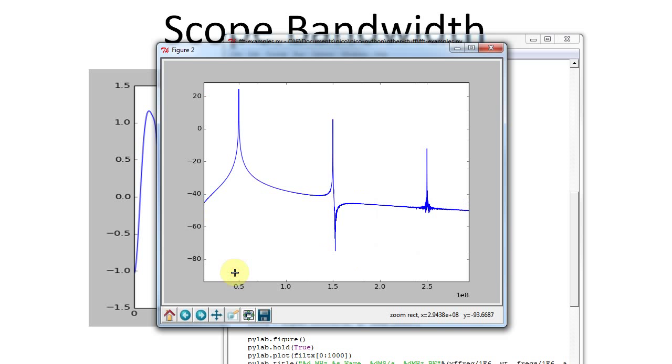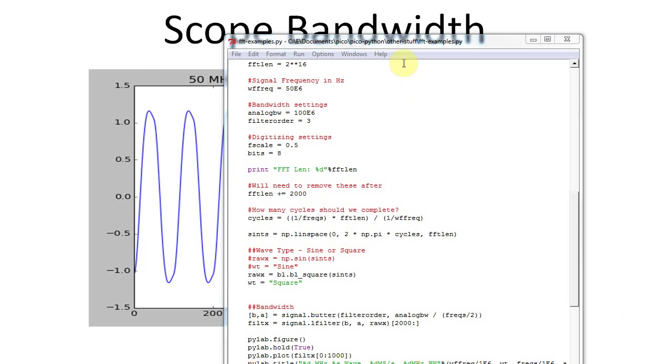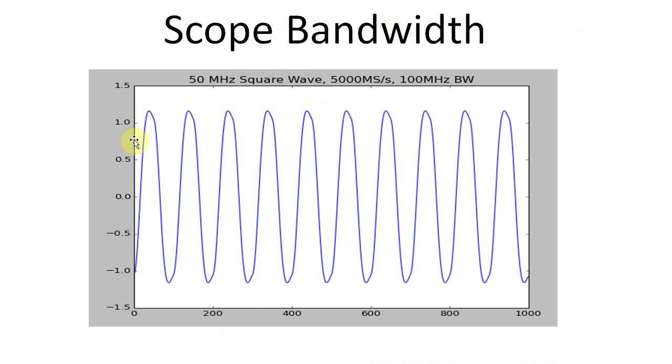We can just zoom in here a bit. There you can see that. 50 MHz, 150 MHz, 250, etc. If your scope is rolling off those higher order harmonics, you actually won't get a square wave.